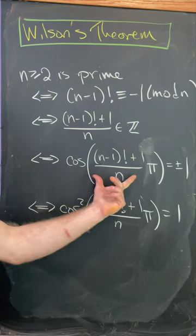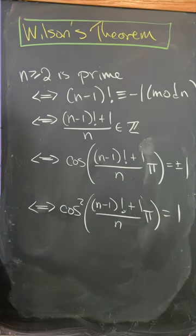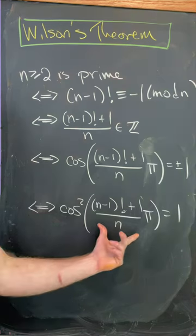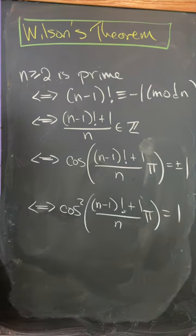That's equivalent to cosine evaluated at that times pi being plus or minus 1. But then squaring that'll be equivalent to cosine squared evaluated at all of that stuff being equal to 1.